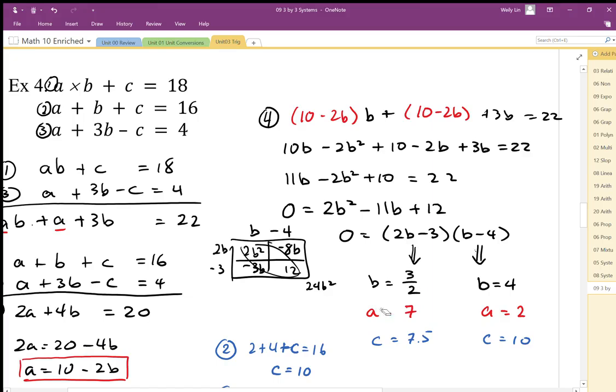We can check this a plus 3b. 3b is going to be 4.5. So that's going to be 11.5 minus 7.5 is going to be equal to 4. So it works for all three sets. So there's actually two sets. There's two sets of solutions for this system of equations.